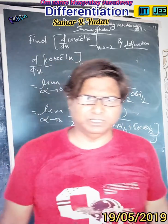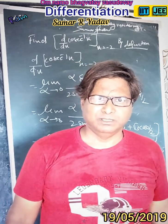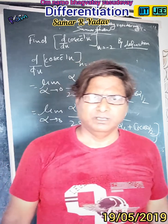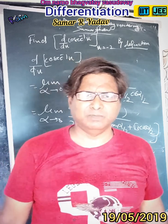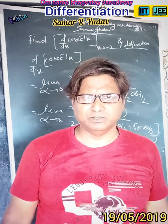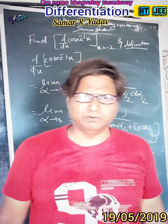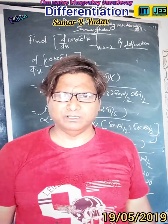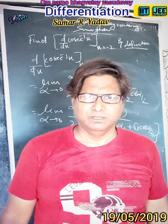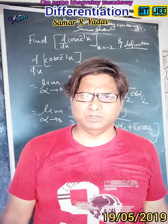So this solves the numerical. Using the definition, we apply the limit as h tends to -2 of [cos⁻¹(x) - cos⁻¹(-2)] upon [x - (-2)], and finally solving the limit, the solution of this numerical by the method of definition is equal to minus 1 upon 2√3.